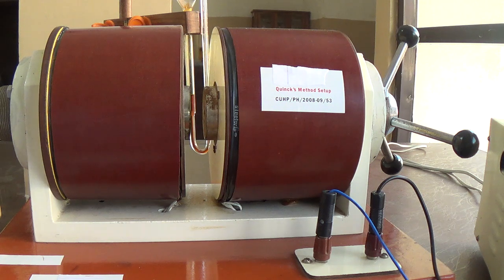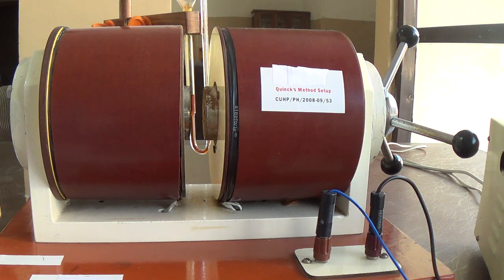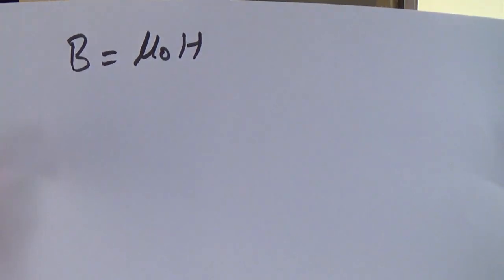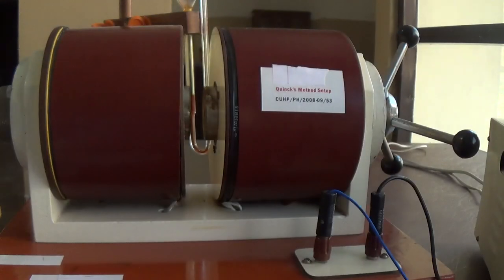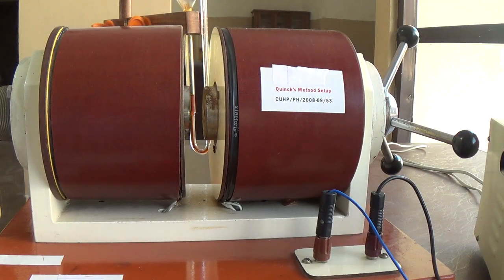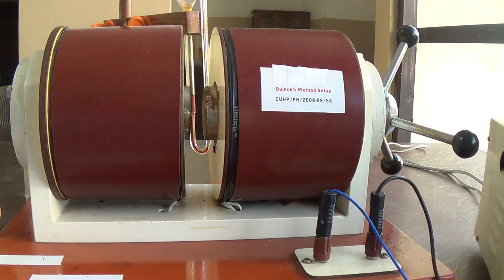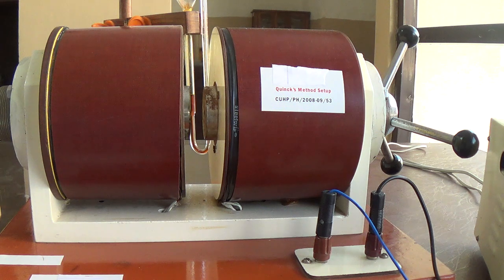Susceptibility is associated with permeability. We know that B = μ₀H in free space, where B is the magnetic flux density and H is the magnetic field intensity. I will discuss all these components in the next section of this video lecture, along with how the formula to measure magnetic susceptibility is derived.